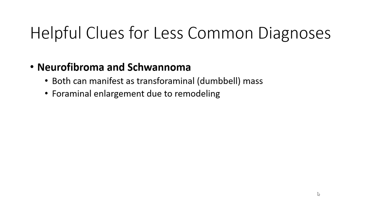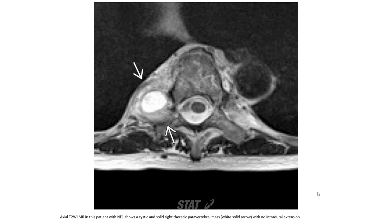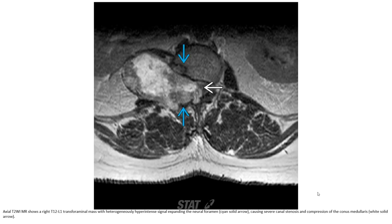Neurofibroma and schwannoma can manifest as a transdural or foraminal mass, with foraminal enlargement due to remodeling. Axial T2WI in a patient with NF1 shows a cystic and solid thoracic paravertebral mass with no intradural extension. Another axial T2WI at T12-L1 shows a transdural mass with heterogeneous signal expanding the neural foramen, causing severe canal stenosis and compression of the conus medullaris.